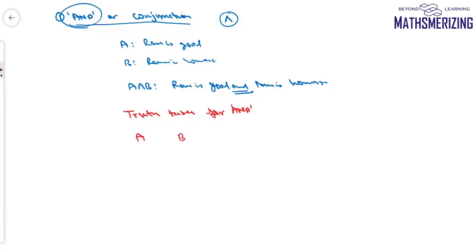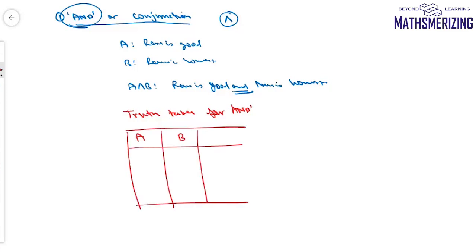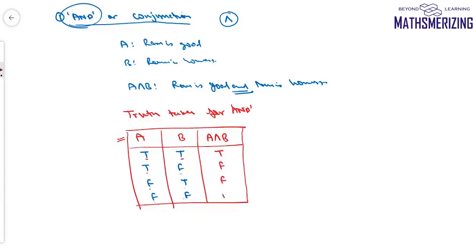For two statements A and B, each can have two possible values — true or false — giving four combinations: true/true, true/false, false/true, and false/false. A compound statement A∧B will be true if and only if both A and B are true. If A is true and B is false, the statement is false. If A is false and B is true, it is false. If both are false, it is also false.